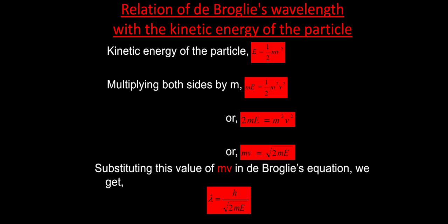Since the De Broglie equation is lambda equals h by mv, replacing mv with the square root of 2mE gives: lambda equals h by the square root of 2mE. This is the relationship between wavelength and kinetic energy — useful when kinetic energy is given instead of velocity.